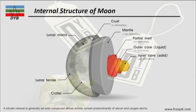We can also look at the internal structure of the moon. Starting from the top, we have the crust which is around 52 kilometers thick. Then we have the mantle which is 1,205 kilometers thick. In the core, we have a partially melted core which is 150 kilometers thick. Then we have the outer core, which is 90 kilometers thick and is liquid, and the inner core which is 240 kilometers and is solid. The crust is mostly made of silicate minerals, which are ionic compounds whose anion consists predominantly of silicon and oxygen atoms.